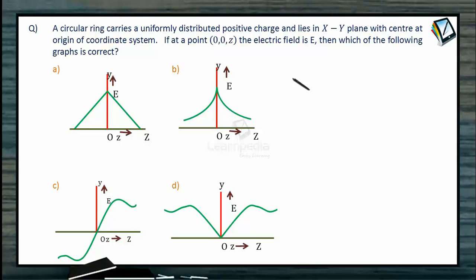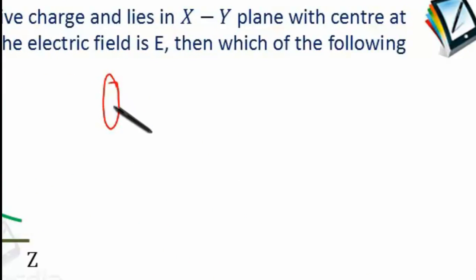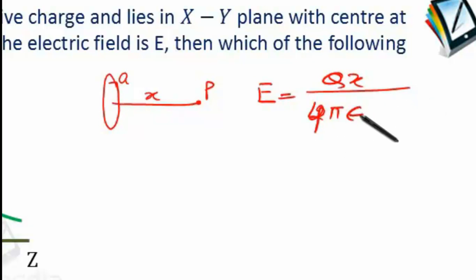First of all, in case of ring, we know that if there is a ring of radius A, and suppose there is a point at distance x from the center of the ring on axis of the ring, this is the point P, then electric field at this point is going to be equal to qx divided by 4πε₀(a² + x²)^(3/2).